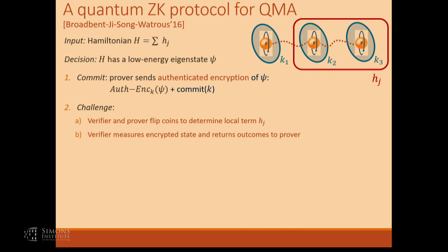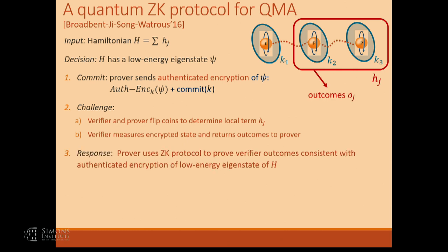The prover is not going to give any information about the commitment at this point. The verifier directly performs the measurement on the authenticated encryption of the state. Here you need a special property: this authenticated encryption, even though it reveals no information about the underlying state, allows you to do what we call a transversal measurement — you can perform a derived measurement directly on top of the authenticated encryption such that, if you have the outcomes of the measurement and have the keys, you can decode back to the actual measurement outcome you were interested in.